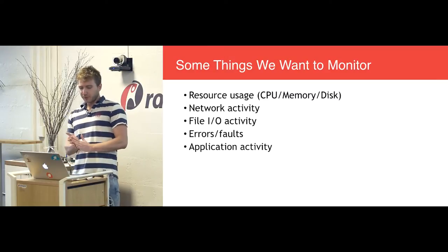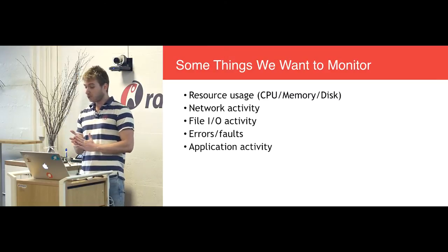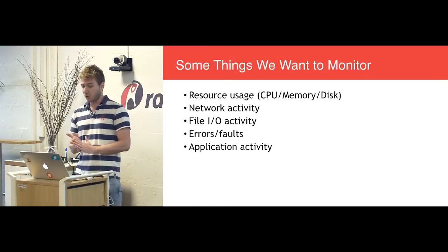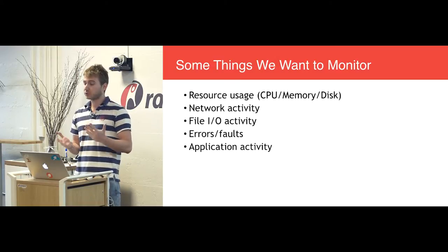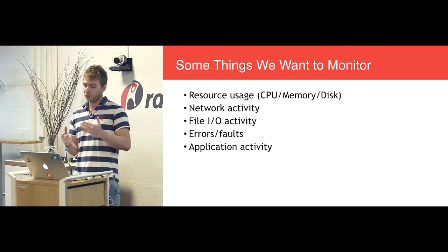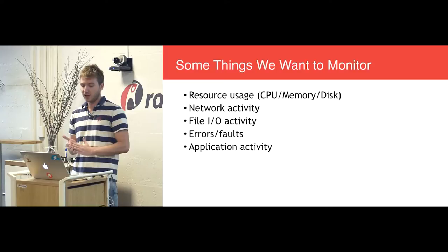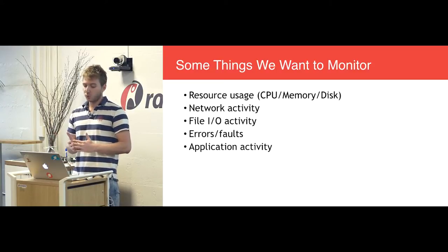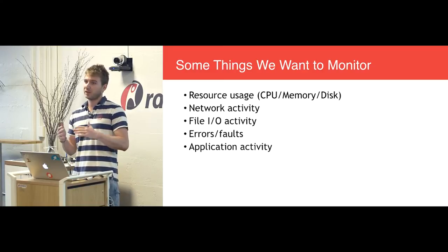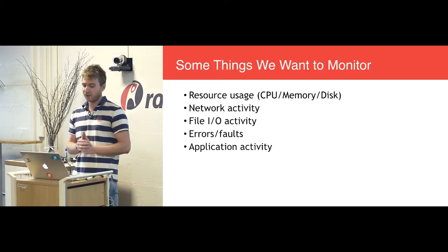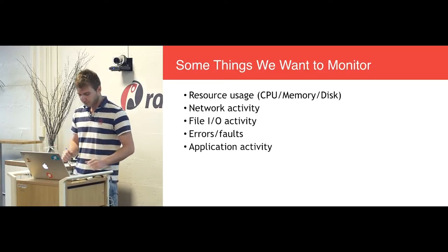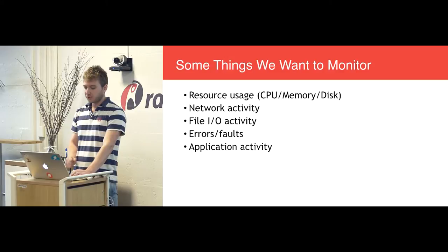What are some things that we are interested in monitoring? I'm going to focus on these five categories, which will cover 99% of what one is interested in. We're going to focus on resource usage — an overview of how your system, your containers, and your processes are doing. Then we're going to dig into network and file activity. Then we'll switch to system, containers, and process errors. And then we'll take a look at some application level monitoring and troubleshooting. Let's pick the first item: resource usage.